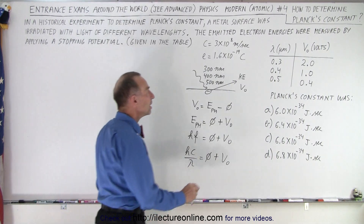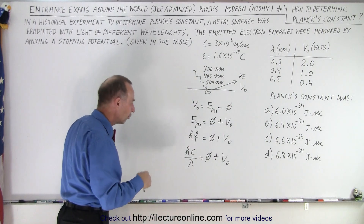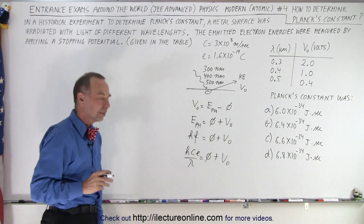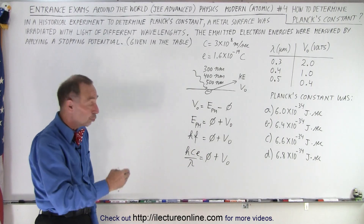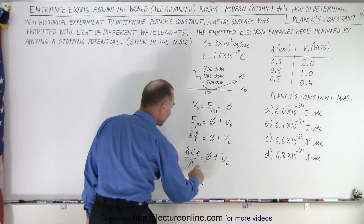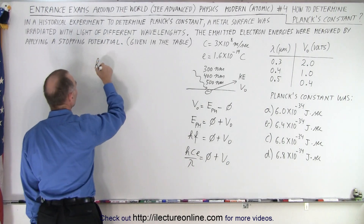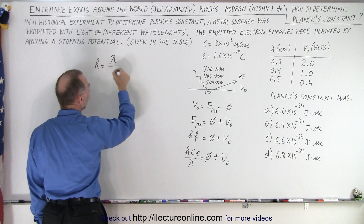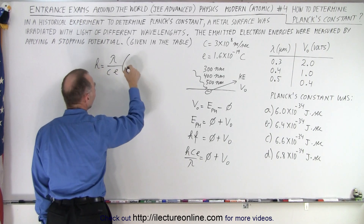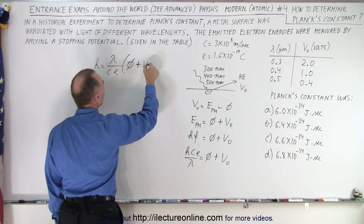The stopping potential is given in volts, so the energy needs to be converted to electron volts. We'll need the charge of a single electron as a conversion factor to convert from volts to electron volts. Solving for h, we find that h equals the wavelength divided by the speed of light, multiplied by the charge of a single electron, times the quantity work function plus stopping potential.